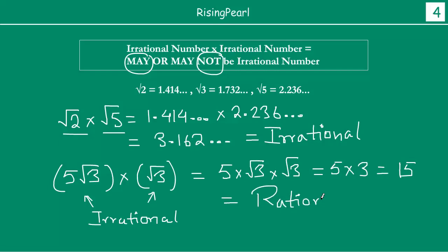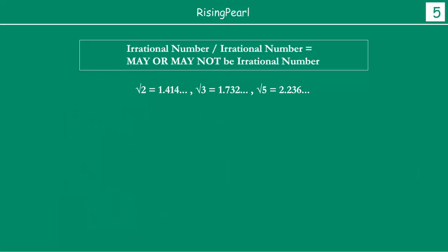15 is clearly a rational number. So just as we saw with addition and subtraction, when we multiply two irrational numbers, the result may or may not be a rational number. Now let's look at division. When you divide two irrational numbers, again, we may or may not get an irrational number.